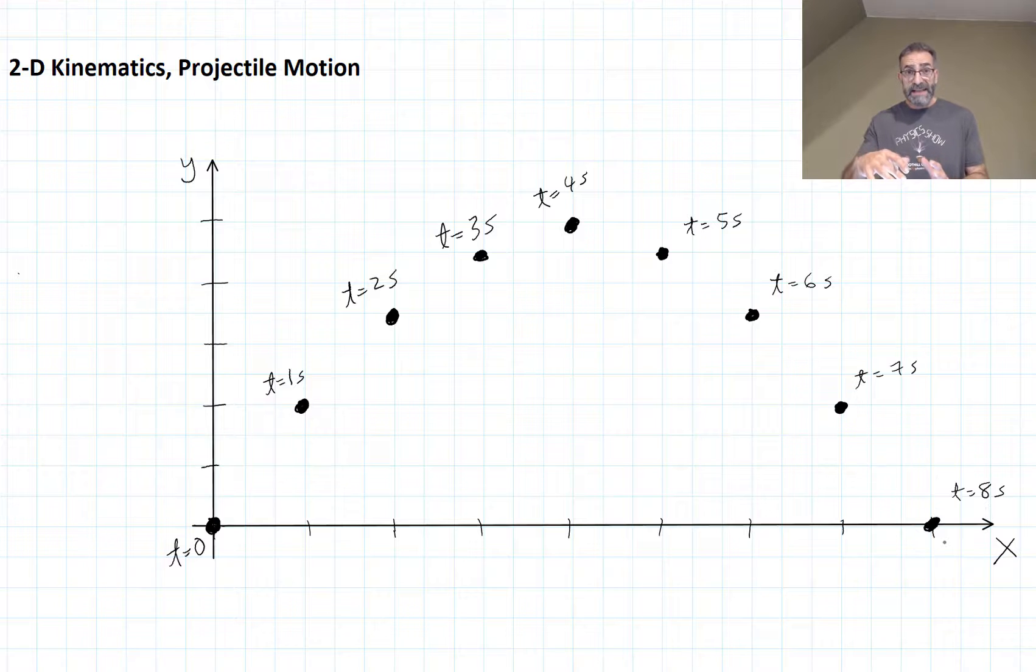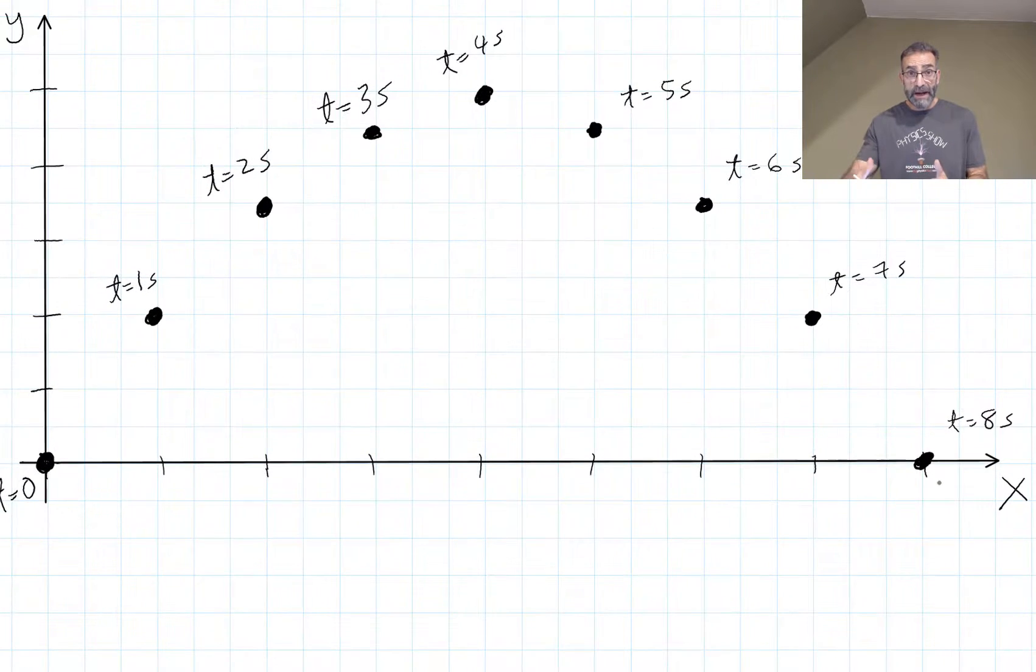We can project this motion diagram onto the x axis and see the x motion. What would the x motion look like? It looks like uniform motion, like constant motion, zero acceleration in the x direction.